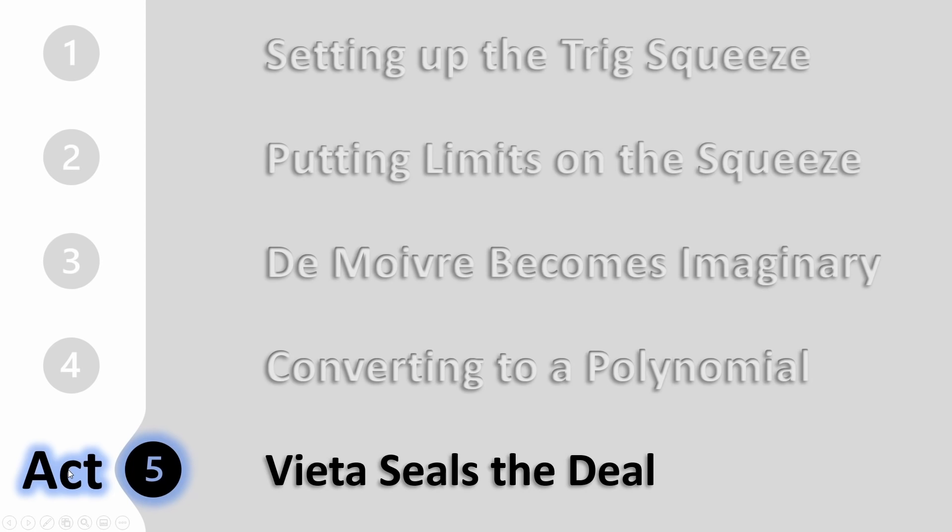For some reason, act 5 is my favorite. It's like a supporting actor comes out of nowhere to receive an Oscar, and his name happens to be Vieta. We know that for a quadratic, the sum of the roots is negative b over a, right? Well, Vieta showed that this little rule can be extended to any polynomial, not just quadratics. Cauchy realized this, of course, and applied it to the polynomial we just derived.